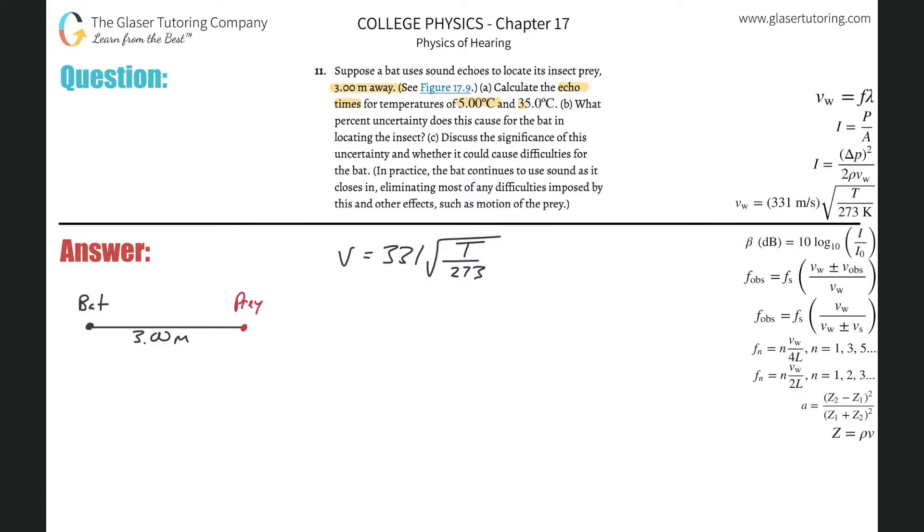So we can find both. We have here the velocity of the sound wave at 5 degrees Celsius will equal 331 multiplied by the Kelvin temperature. So we've got to take the 5 degrees Celsius and add 273 to it and then divide that by 273. The velocity of sound at 5 degrees Celsius is going to be 331 multiplied by the square root of parenthesis 5 plus 273 divided by 273. And this is about 334 meters per second.